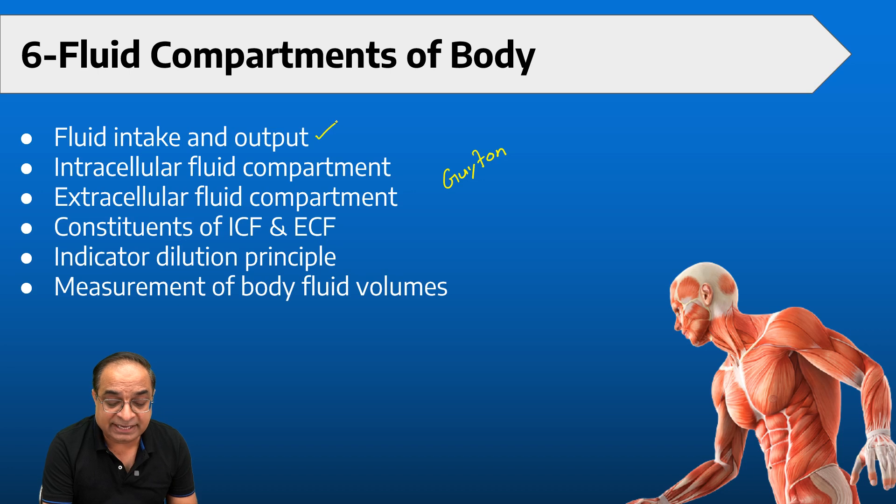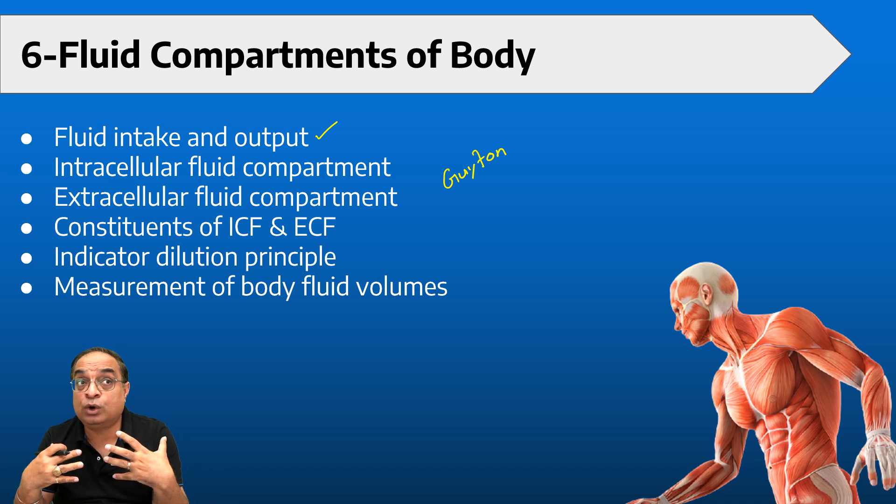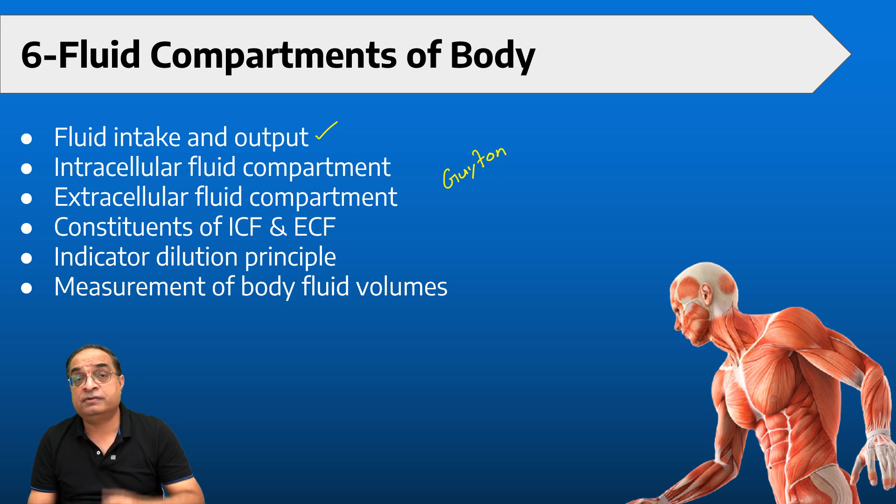Fluid compartments of the body—I'll tell you to exclusively refer to book Guyton for this. Fluid intake and output—what's the total amount of water which you daily intake, how that water is removed from your body. There is sensible water loss, there is insensible water loss, there's water loss in the form of evaporation from your skin in the form of sweat. Then water is lost through your lungs also. Water is eliminated in the form of urine and even in the form of saliva and even tears also. We'll be discussing about intracellular fluid compartment, extracellular fluid compartment, constituents of ICF and ECF, then indicator dilution principle, which is a method which we use for the measurement of the body fluid volumes. So this is the sixth topic and these are the subtopics which we need to study.